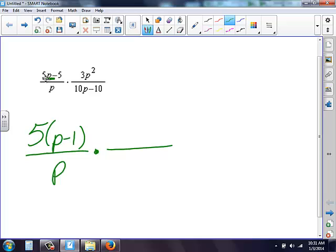Times, on the top here, 3p squared. Can't simplify that, so I'm going to leave it there. On the bottom I have 10p minus 10. I can pull out a 10. Therefore I'm left with p minus 1.